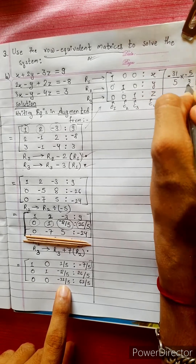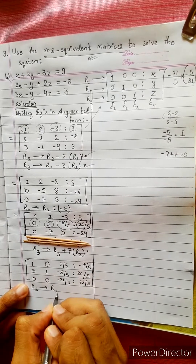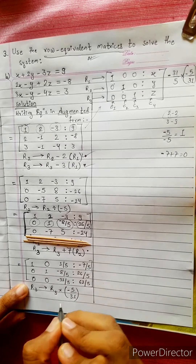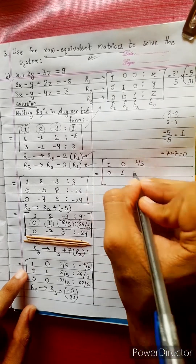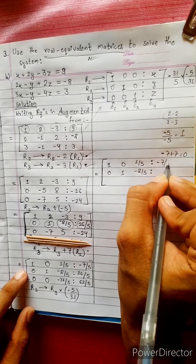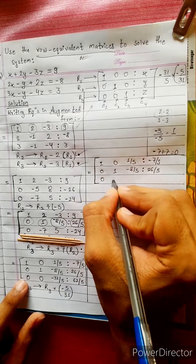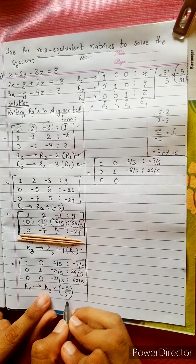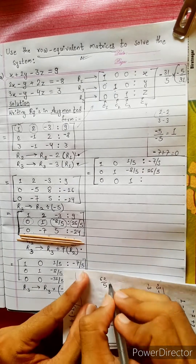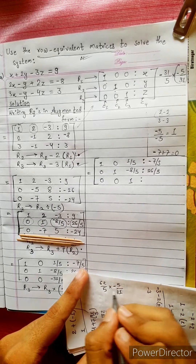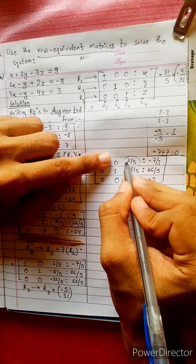Minus 5 by 31. Let's multiply this. What do we do? The answer: R3, change into R3 multiplied by minus 5 by 31. This operation is equal to: 1, 0, 1 by 5; 0, 1, minus 8 by 5, minus 7 by 5; 26 by 5; 0, 0, 0; minus 5 by 31 times 62 divided by 5. Cancel to get 1.